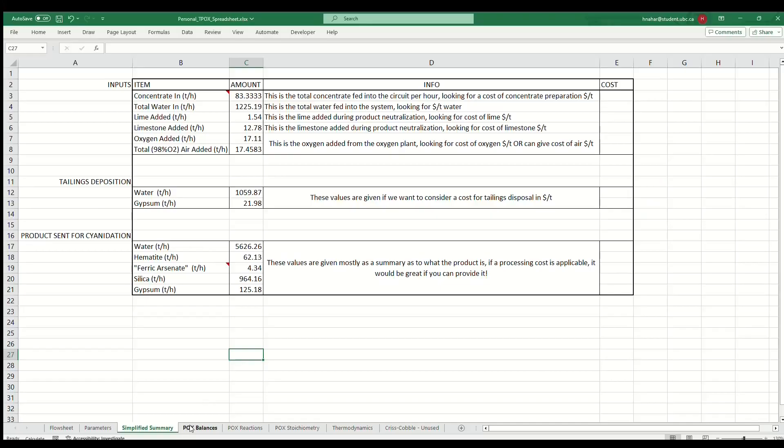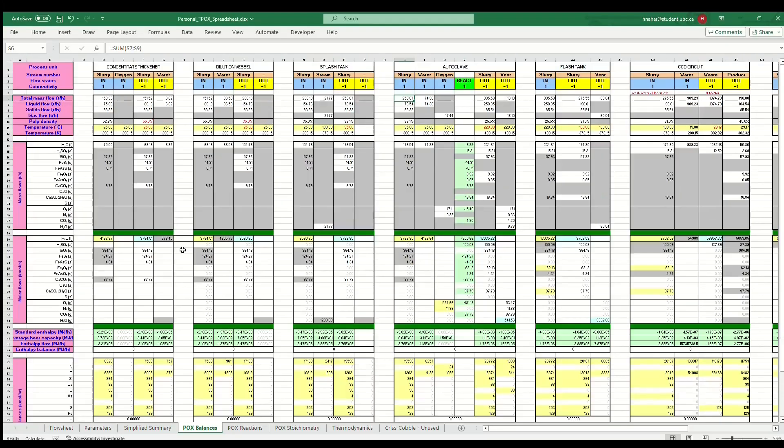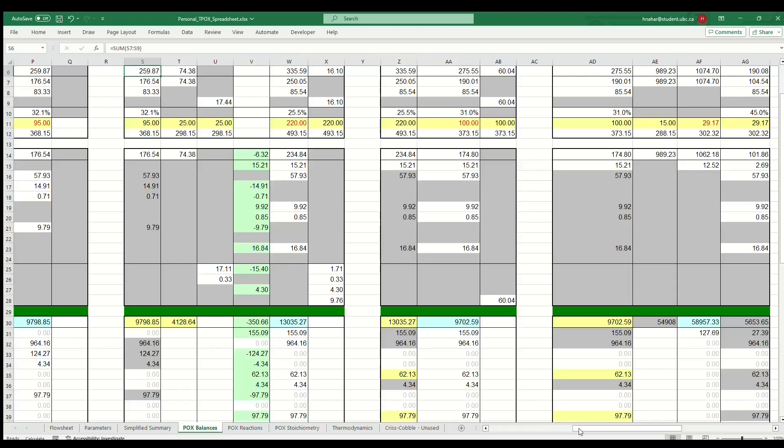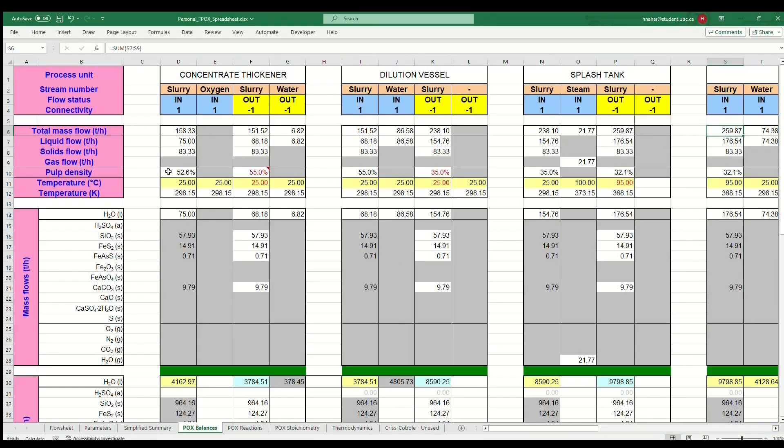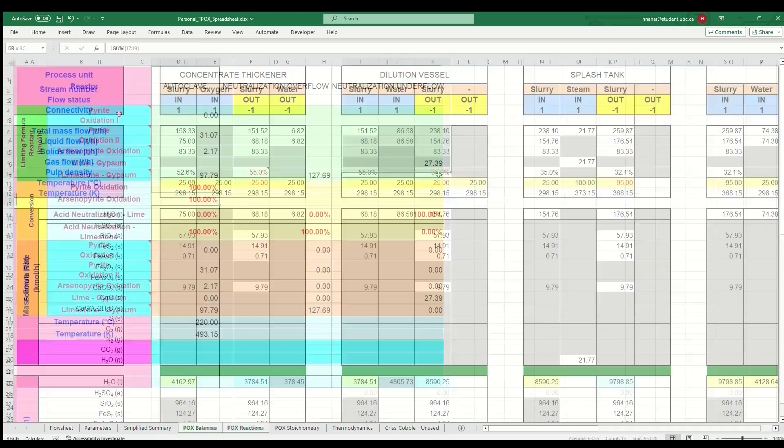A mass and heat balance is completed for each process. Thermodynamic principles were employed into enthalpy and mass balance models to calculate optimal flow rates for each raw material.